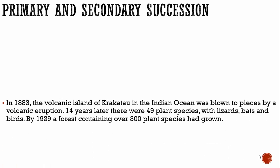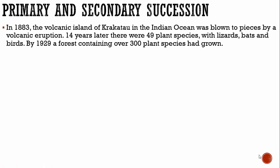In this video, we'll be taking a look at succession, both primary succession and secondary succession. In 1883, the volcanic island of Krakatoa in the Indian Ocean was blown to pieces by a volcanic eruption.